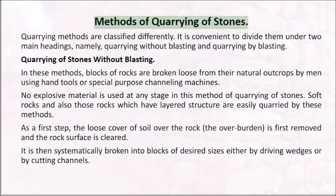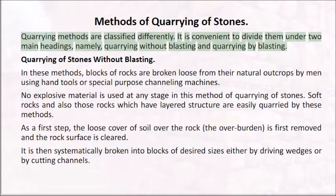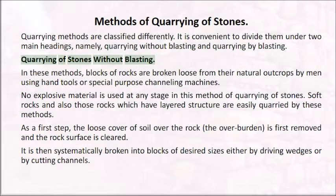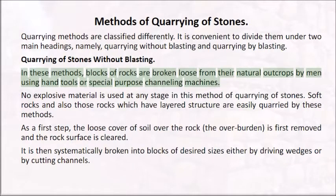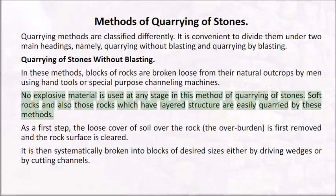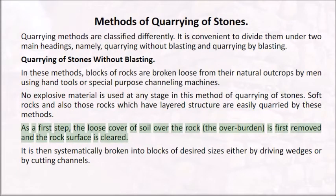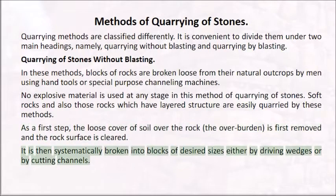Methods of quarrying of stones are classified under two main headings: quarrying without blasting and quarrying by blasting. In quarrying without blasting, blocks of rocks are broken loose from their natural outcrops by men using hand tools or special purpose channeling machines. No explosive material is used. Soft rocks and those with layered structure are easily quarried by these methods. The loose cover of soil (the overburden) is first removed, and the rock surface is cleared. It is then systematically broken into blocks of desired sizes either by driving wedges or by cutting channels.